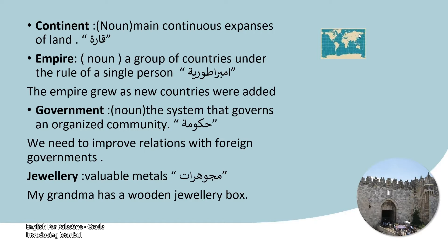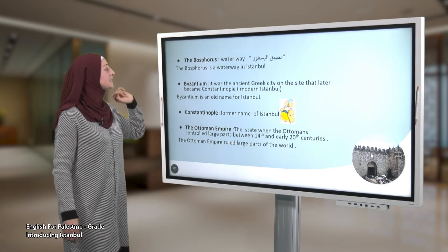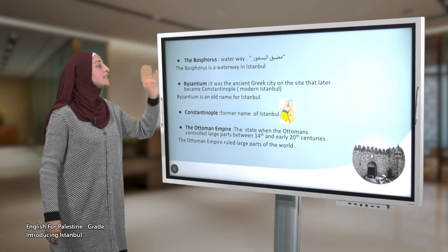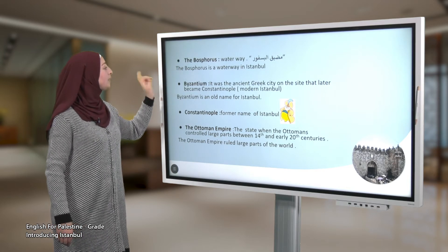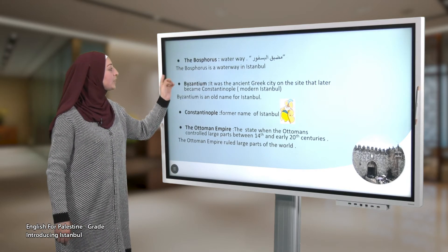Word number three: government. It is a noun meaning the system that governs an organized community. Example: we need to improve relations with foreign governments. Word number four: jewelry. It is a noun referring to valuable metals. Example: my grandma has a wooden jewelry box. Next: the Bosphorus. It is a waterway.